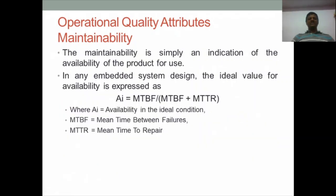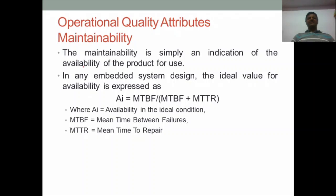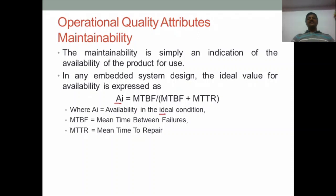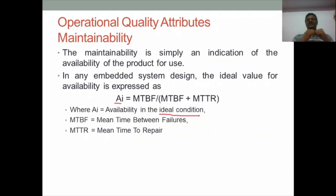Keeping in mind reliability, maintainability, and availability, the relationship for availability is expressed by the formula: A(i) = MTBF / (MTBF + MTTR), where A(i) is availability in ideal conditions — where all conditions are met for the embedded system's use. In practice, ideal conditions are rarely met; there will always be some failures, and the time required for failure and repair determines availability.